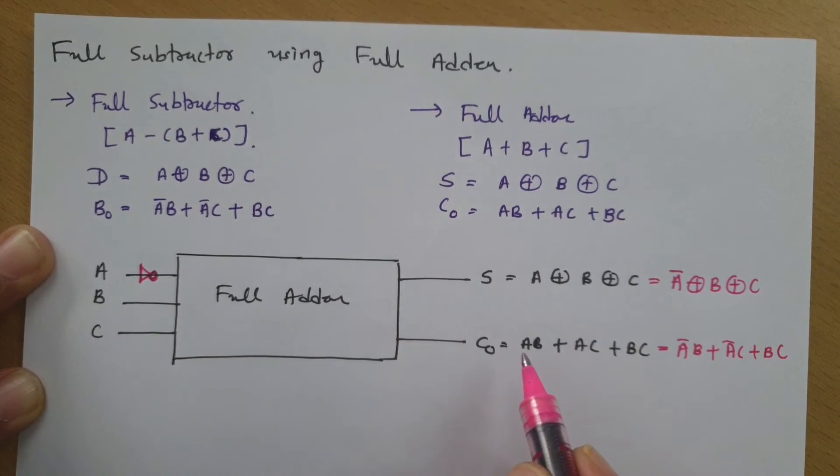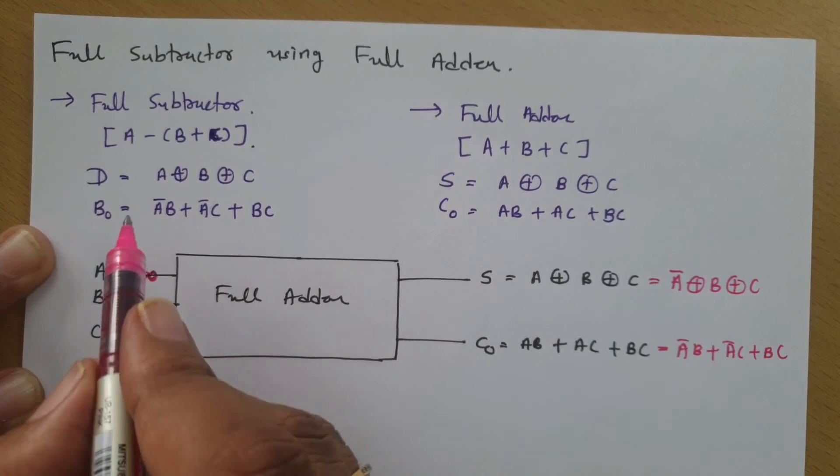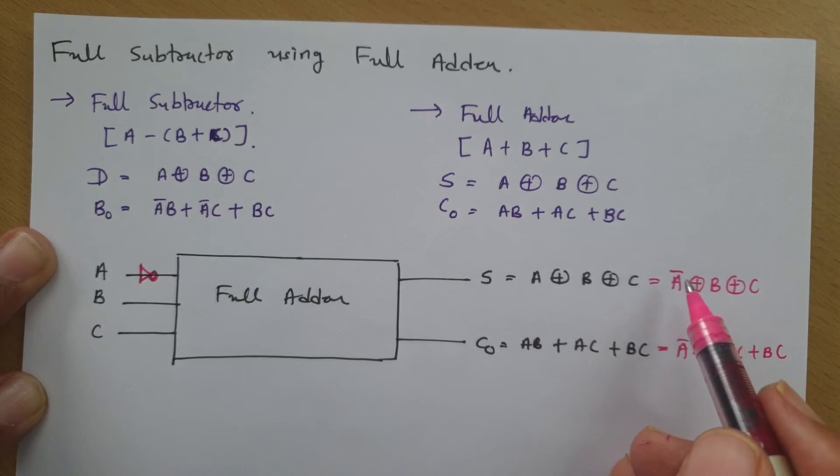So now you can see my carry signal of full adder is similar to borrow. But if I see my sum signal, that is changing, now it is A bar over here.